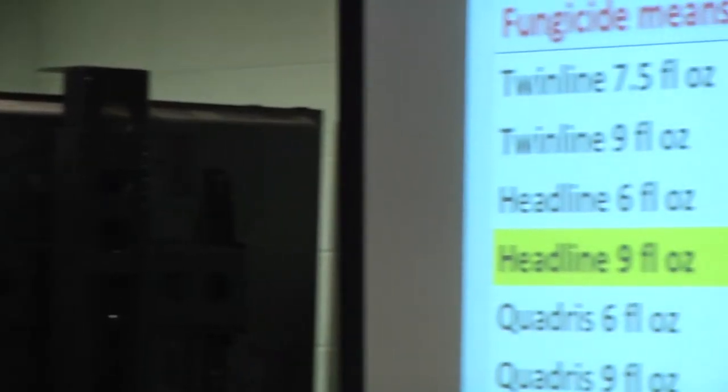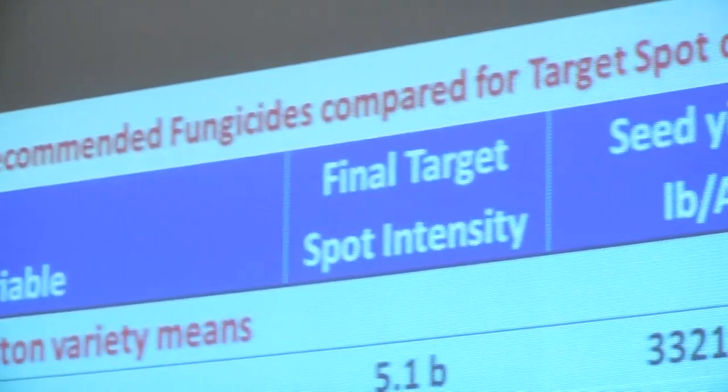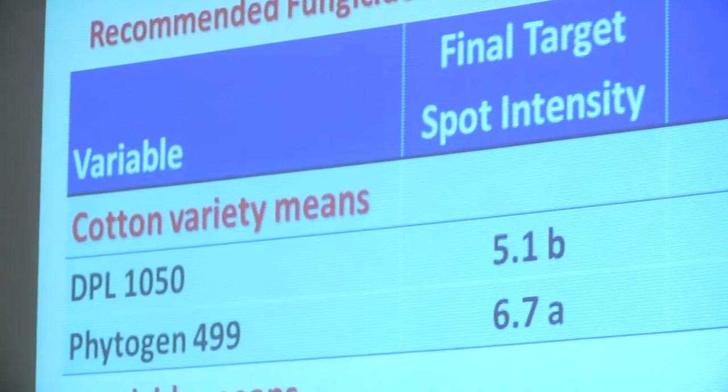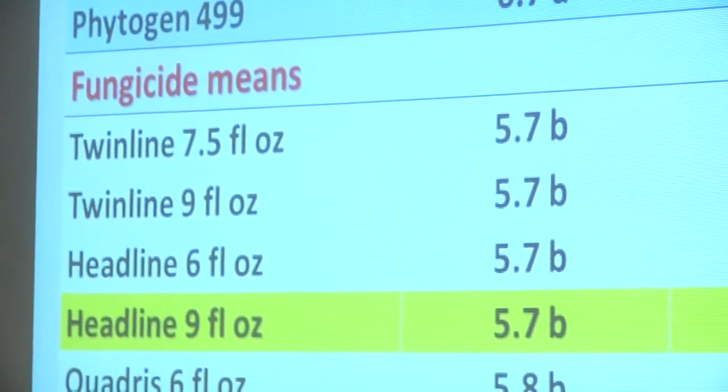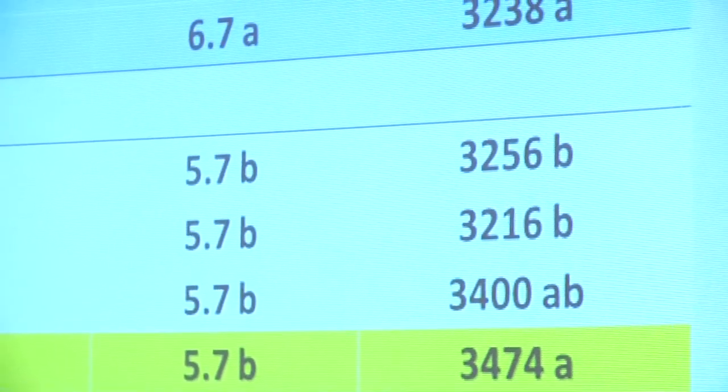We have three products labeled for the foreseeable future, and they all contain a strobilurin fungicide component. As a result, we're limited to two applications of any of these labeled products. The labels say to alternate with a fungicide with a different mode of action — but there isn't one. It would be nice if we had a broad-spectrum material like chlorothalonil, mancozeb, or Manzate to mix in, but we don't. The fungus that causes target spot has a real history on vegetables of developing resistance — on tomatoes in Florida, you put Headline out and it won't work anymore.